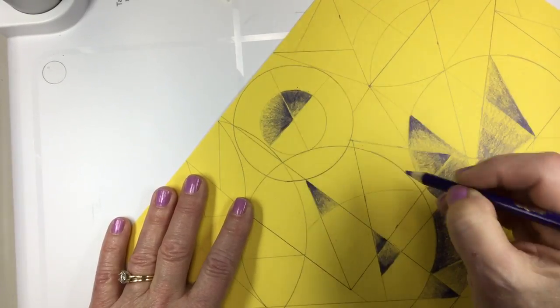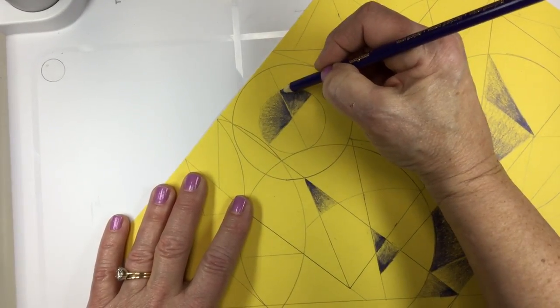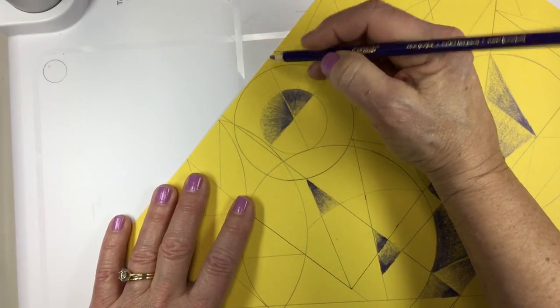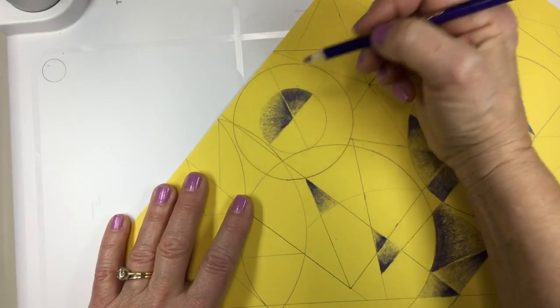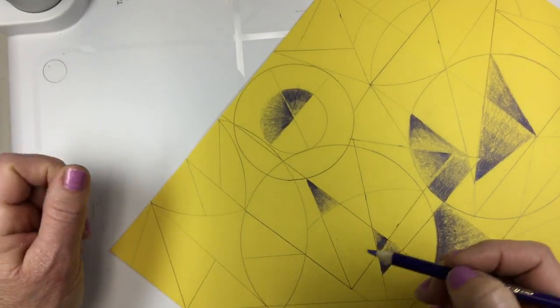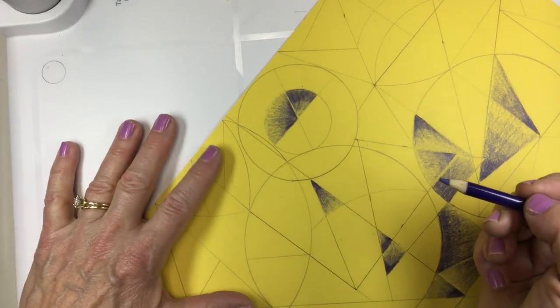And you'll notice, do you see that little tiny skinny strip of unshaded paper? That will make a little stripe between the areas, and that's something that you can do if you like to separate them and make them really pop when your design is finished.